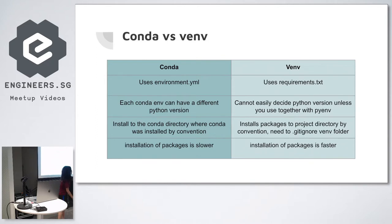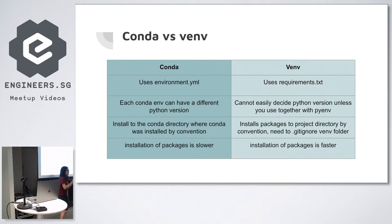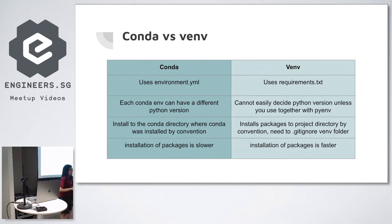Some projects use requirements.txt, mostly web projects. The con is that you cannot really decide the Python version unless you use something like PyEnv. VENV doesn't decide your Python version — it only decides the dependencies — and it installs packages to the project directory by default, so you need to gitignore those packages. Package installation with VENV is faster.